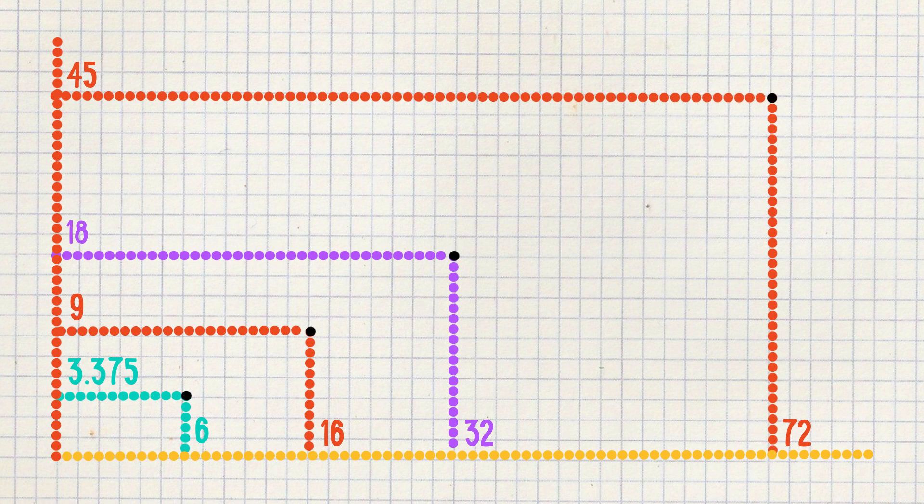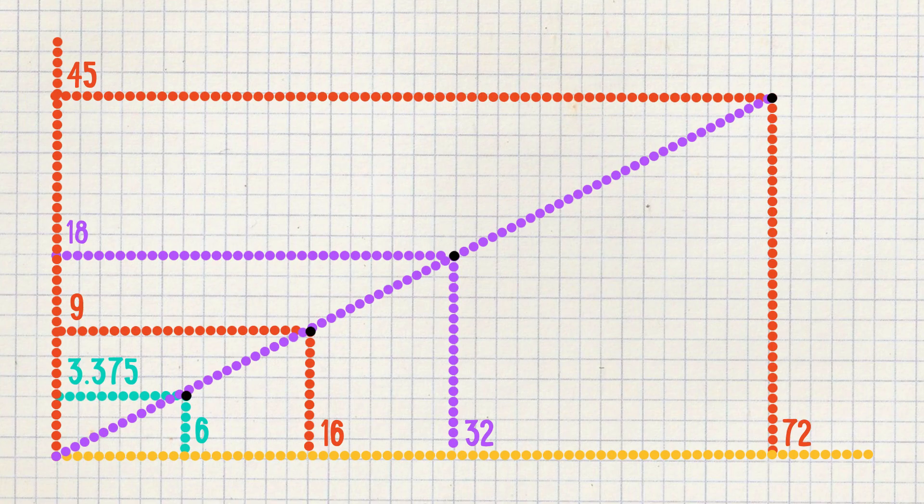One other way to check if you have an equal ratio is to plot the points on a graph. If it forms one straight line, then you have yourself an equal ratio.